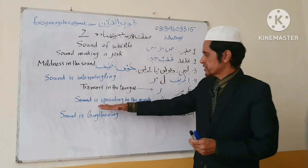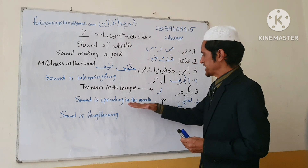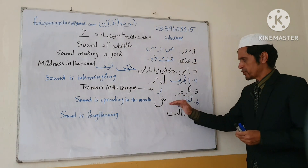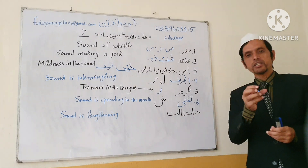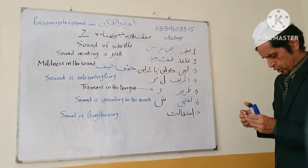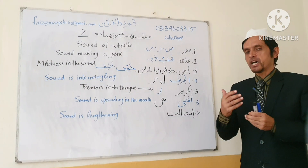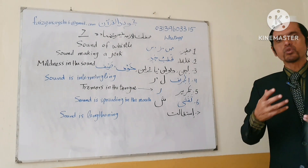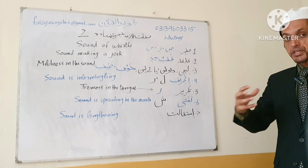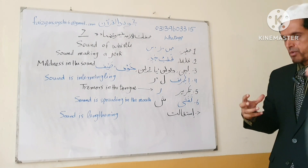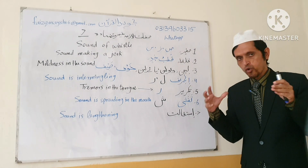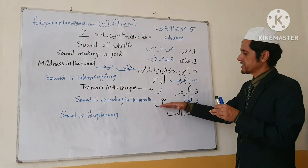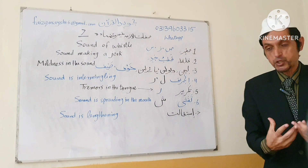Number six is Tafashi — it means the sound is spreading in the mouth. When we articulate Sheen, this Tafashi is found only in Sheen. When we articulate Sheen, we say 'Sheen, Yash-hadu, Yash-hadu' — the sound spreads inside your mouth and the whole mouth is full of sound when we articulate Sheen. This is called Tafashi.